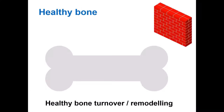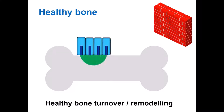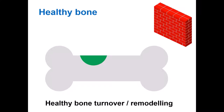That balance allows for bone repair. Healthy bone can undergo some wear and tear, and the damaged bone will be removed by osteoclasts and then replaced by osteoblasts. The newly formed bone, seen here in green, is unmineralized and will undergo mineralization in due course, and everything returns to normal. We call this healthy bone turnover or bone remodeling.